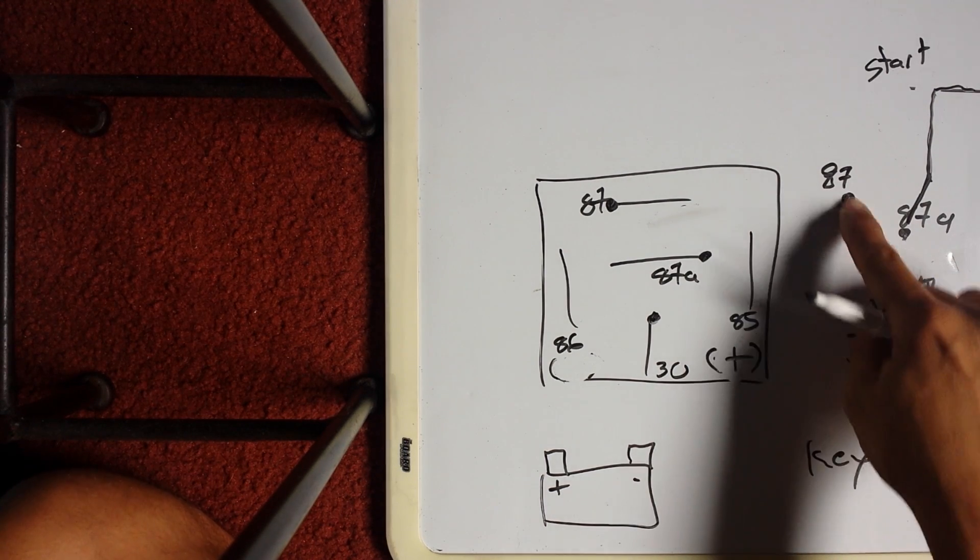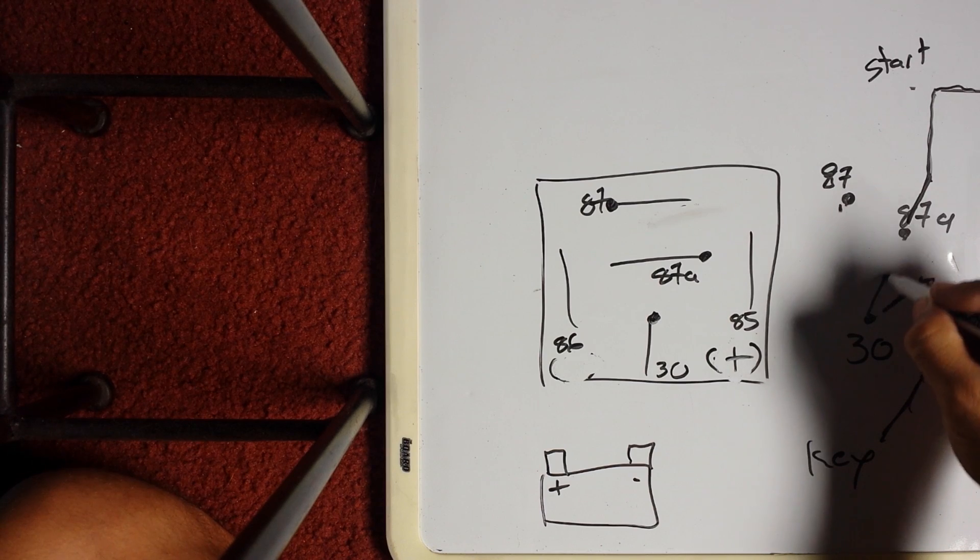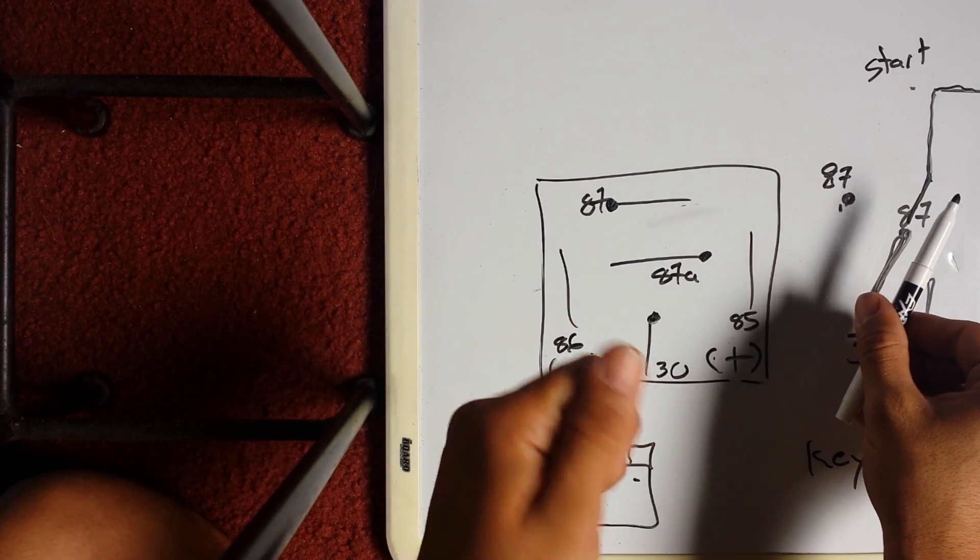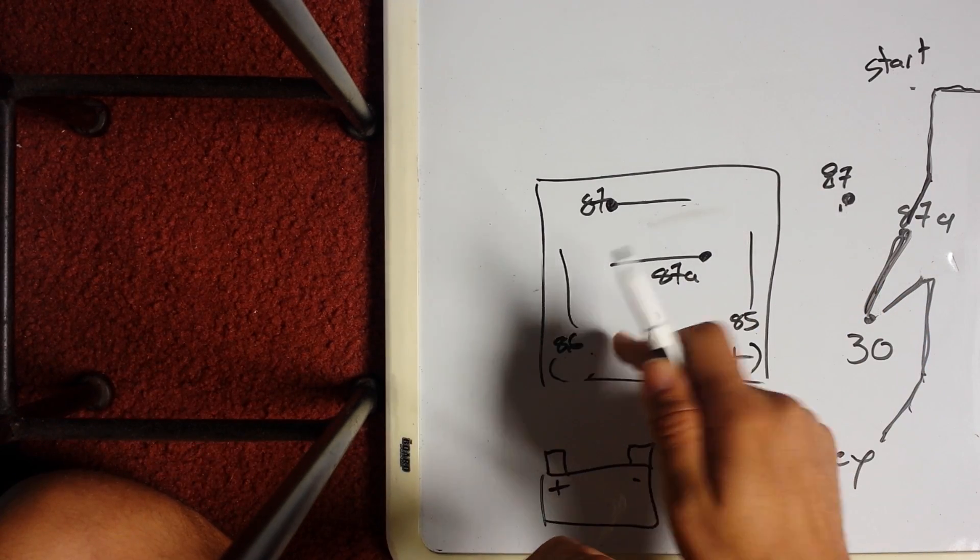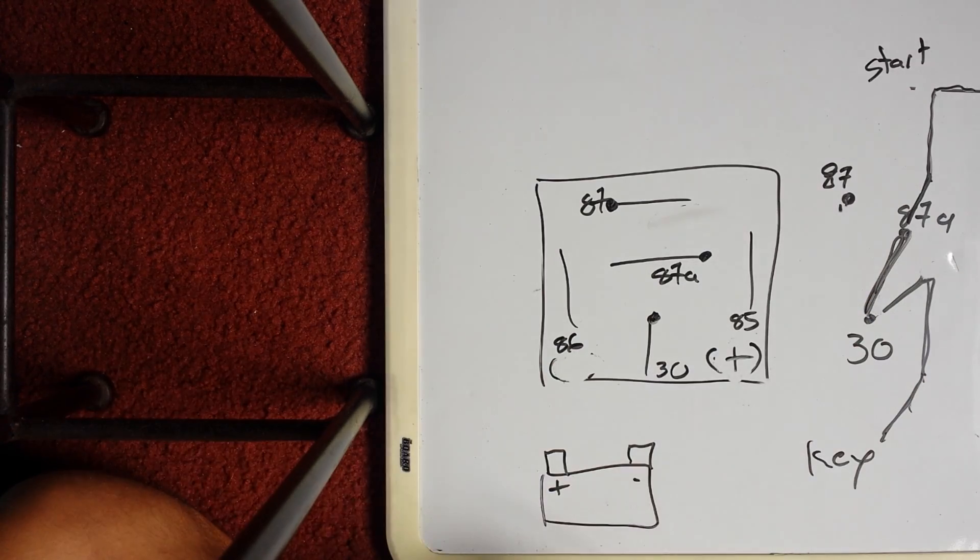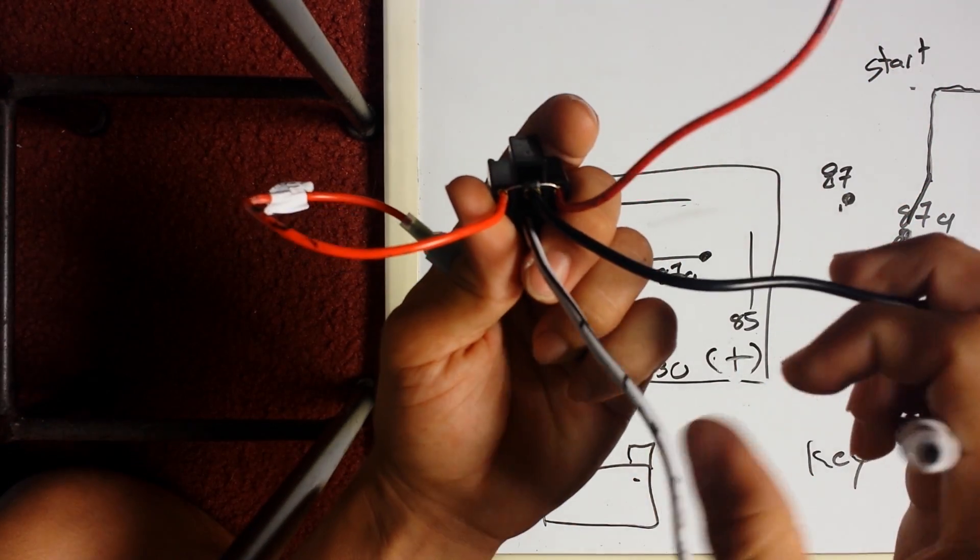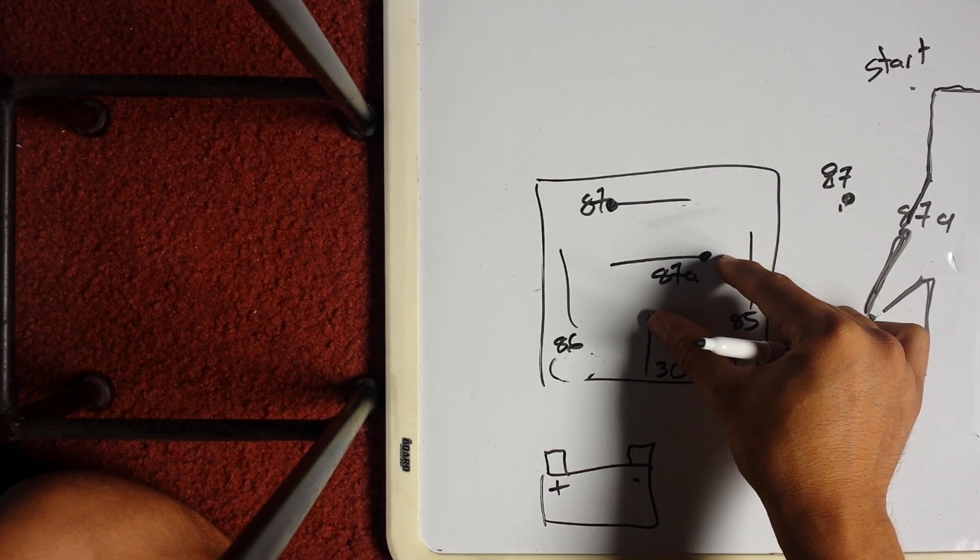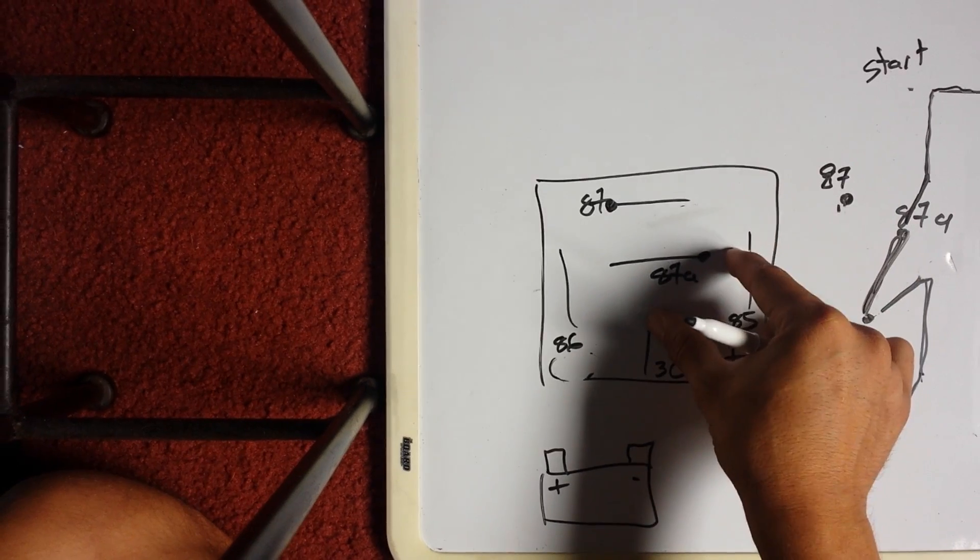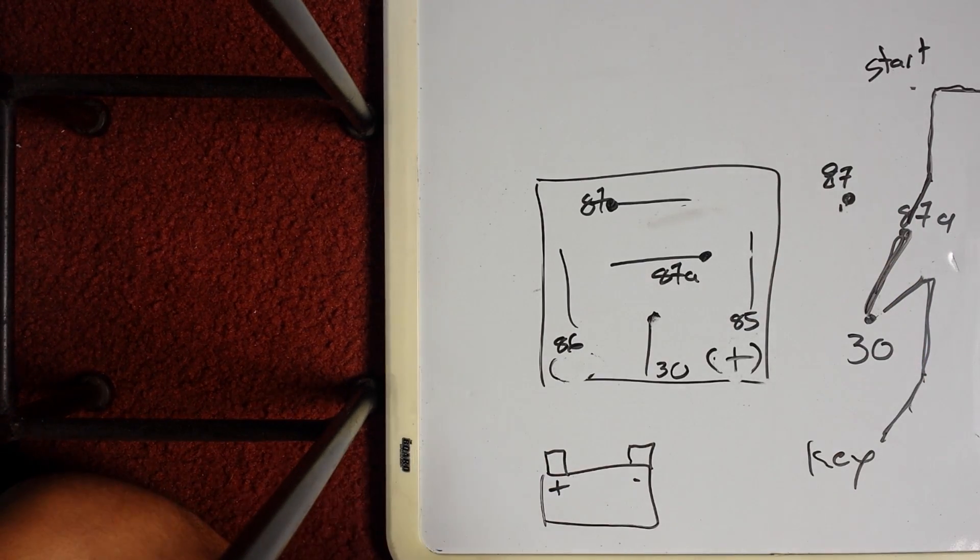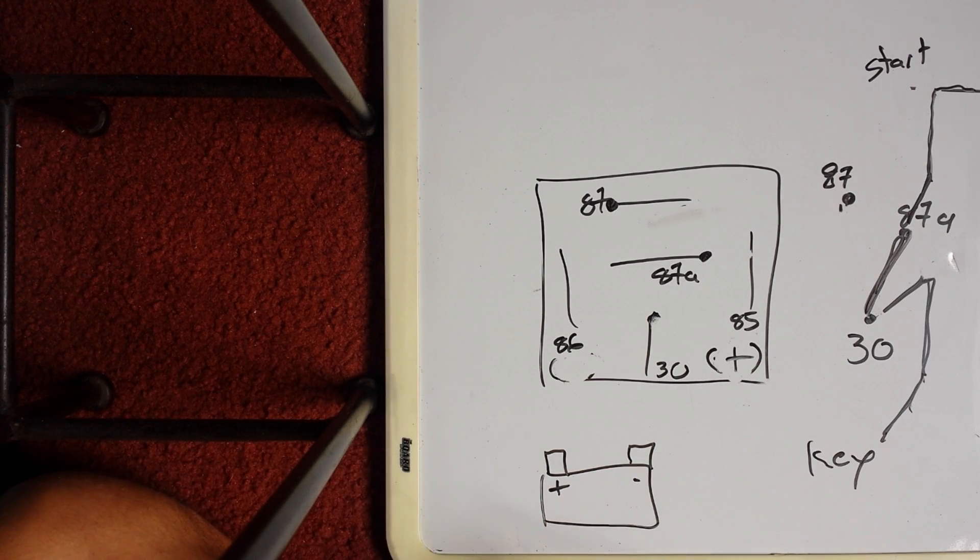So you'll still get 12 volts on this side, but now it goes back to rest. Now every time you crank, this is still getting 12 volts, but there's no more ground to power this relay up. So the starter kill—that's all a starter kill is inside. It's just a relay. So they're connected together. Every time it's energized, it connects to 87.